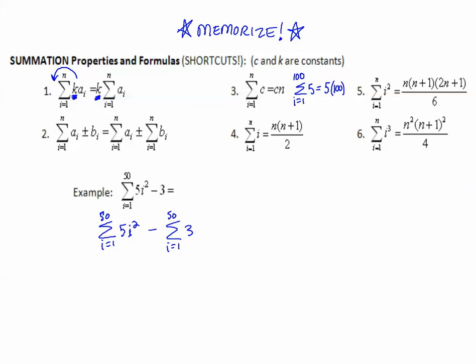Next I can use the distributive property to pull that 5 out in front to just leave the i squared by itself. So now I have 5 times the sum from i equals 1 to 50 of just i squared. Minus—this is just the constant, so I'm not going to do anything with that yet.